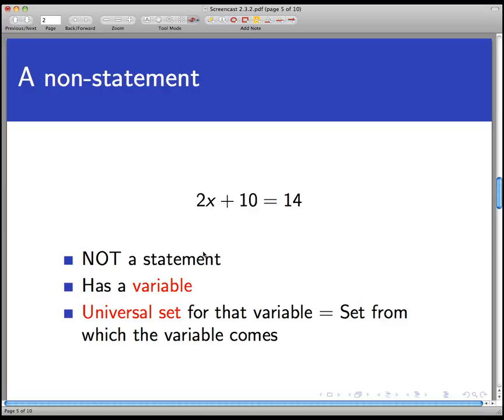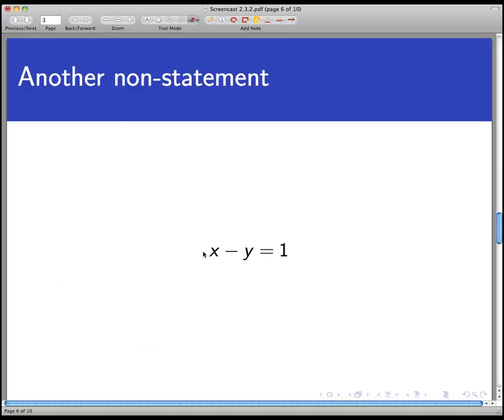Now, so we have a statement that it's not a sentence because of the variables. Here's another example of such a thing, except now we have two variables, an x and a y. Again, this is a sentence. It's well formed and it's well understood in math or you could even say it in English, but it's not a statement because we can't tell what the truth value is until we know an x and a y value.